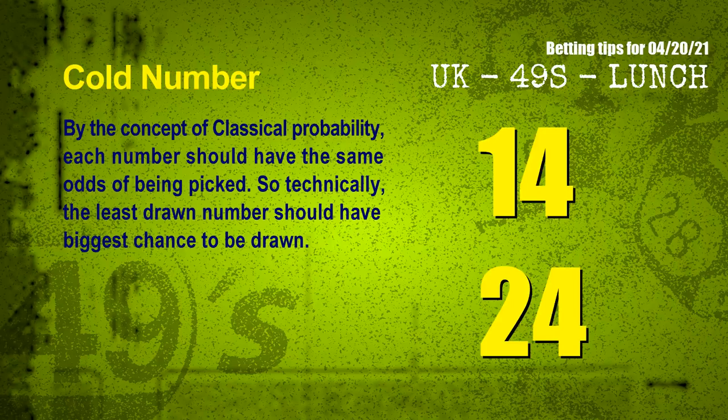At the end of this video, we have two more tips for you: cold numbers and overdue numbers. By the concept of classical probability, each number should have the same odds of being picked. So technically, the least drawn number should have the biggest chance to be drawn. We count thousands of results and find out the coldest two numbers for next draw will be 14 and 24.